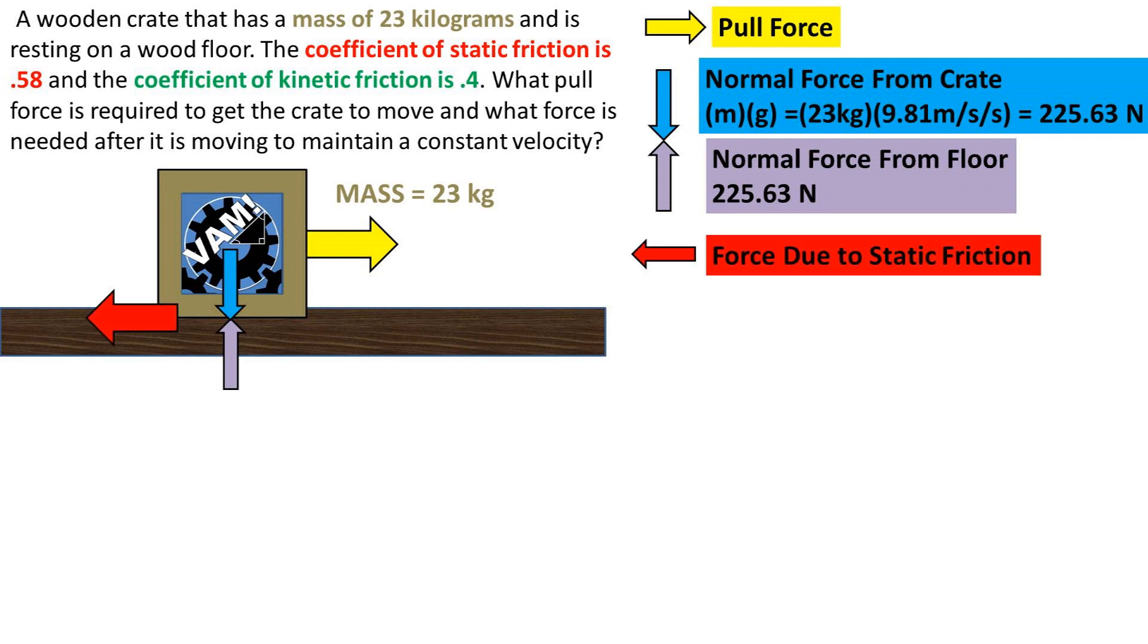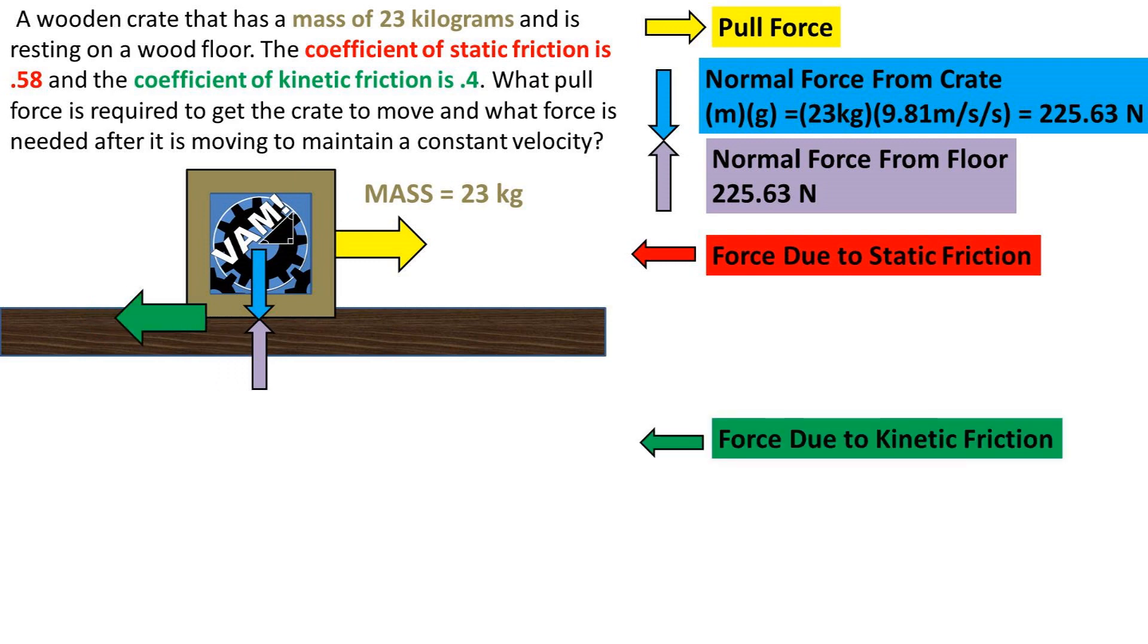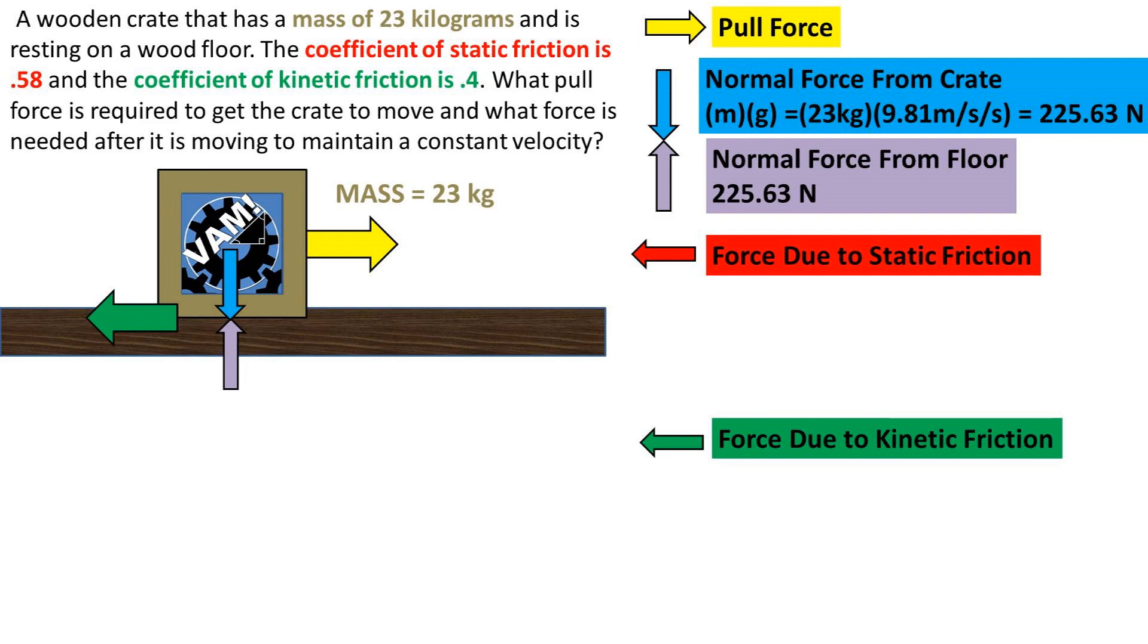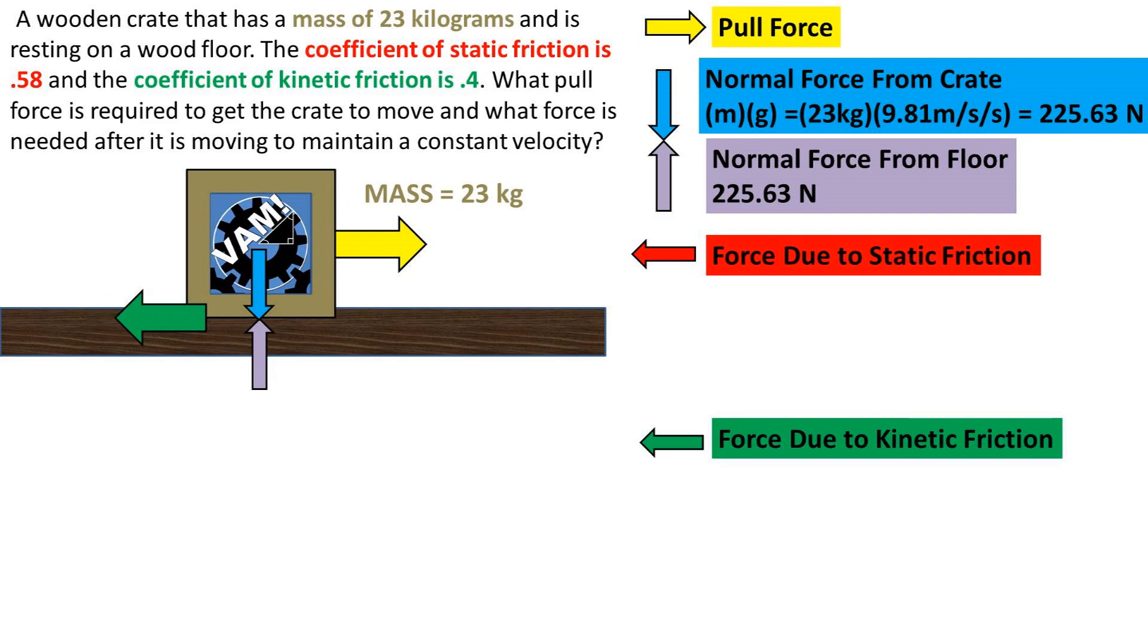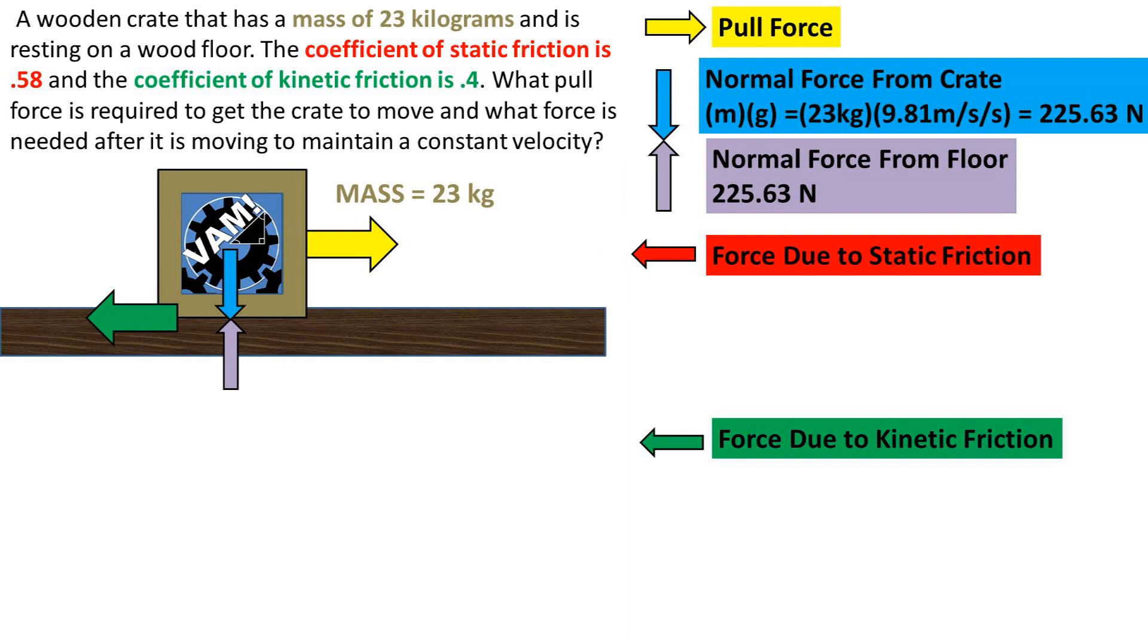The force pulling on the crate will be counteracted by the force due to static friction, which will be marked with the red arrow. After the static friction is overcome, the crate will start moving and the pull force will be counteracted by the force due to kinetic friction, which will be marked with a green arrow.